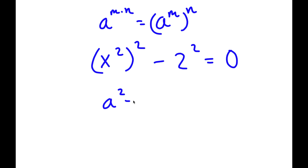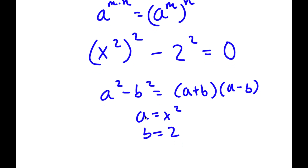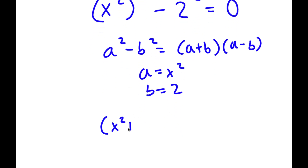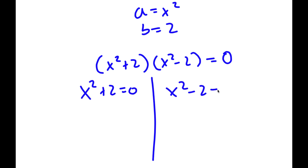Now, if I have something in the form a squared minus b squared, this is equal to a plus b times a minus b. So in this case, a is equal to x squared and b is equal to 2. So now I have x squared plus 2 times x squared minus 2 is equal to 0. This gives me two equations: x squared plus 2 equals 0, and x squared minus 2 equals 0.